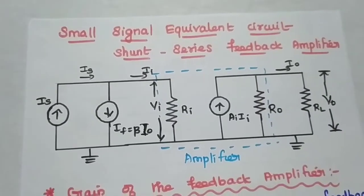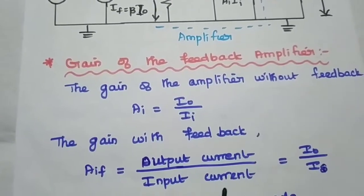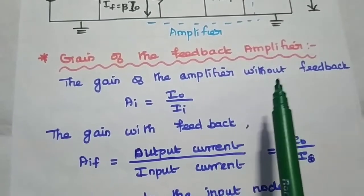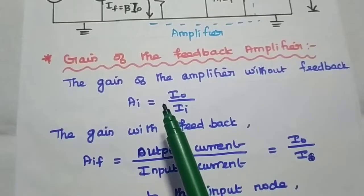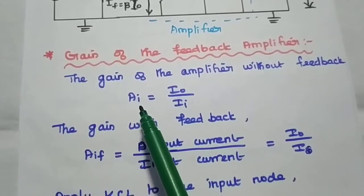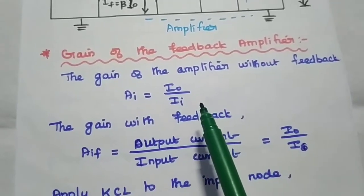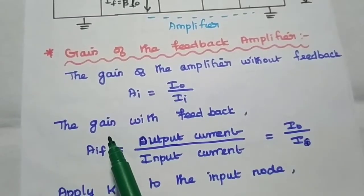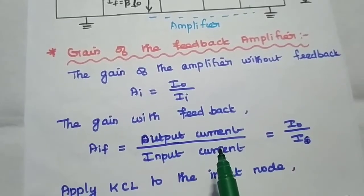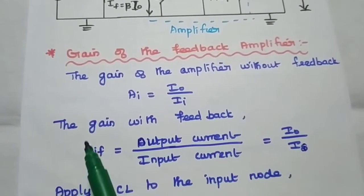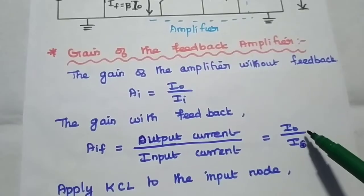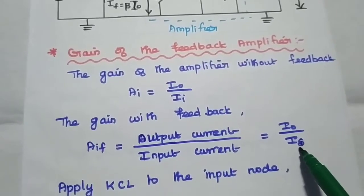Next we are going to find out the gain of the feedback amplifier. For that, first we have to consider the gain of the amplifier without feedback, that is ai equal to io divided by ii, where ii is the actual input given to this amplifier without feedback. Next we have to get the value of gain with feedback, that is equal to output current divided by input current. The output is io, so gain with feedback aif is equal to io divided by is, that is the source current.